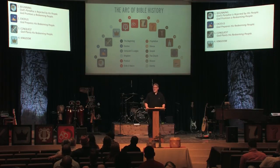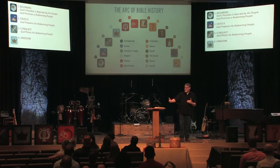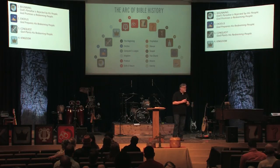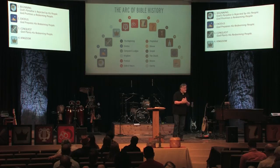Now we come to the icon marked Kingdom. This section of scripture entails 1 Samuel, 2 Samuel, 1 Kings, and 2 Kings, with some overlap with 1 and 2 Chronicles. We come to where Israel is at a place where it's bad — people are falling after different gods and the judges have come and gone.